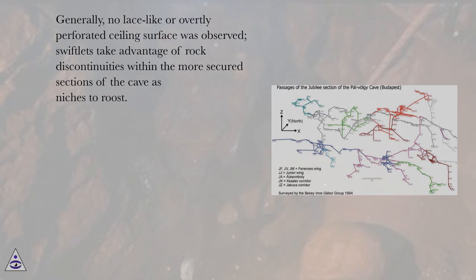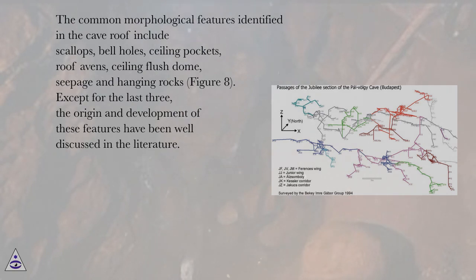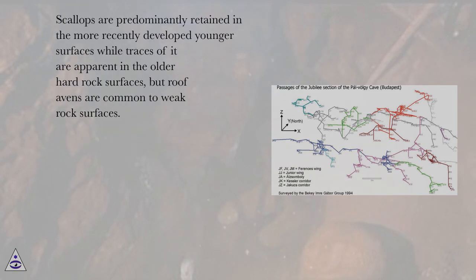Generally, no lace-like or overtly perforated ceiling surface was observed. Swiftlets take advantage of rock discontinuities within the more secured sections of the cave as niches to roost. The common morphological features identified in the cave roof include scallops, bell holes, ceiling pockets, roof ovens, ceiling flush dome, seepage, and hanging rocks (figure 8). Scallops are predominantly retained in the more recently developed younger surfaces, while traces are apparent in the older hard rock surfaces, but roof ovens are common to weak rock surfaces.